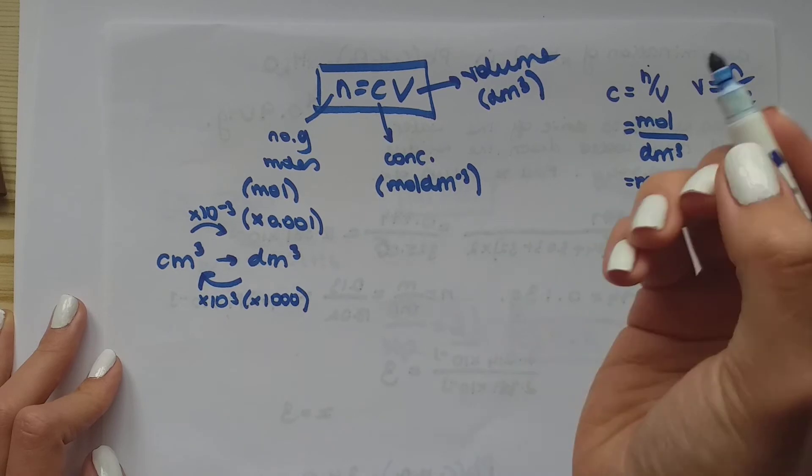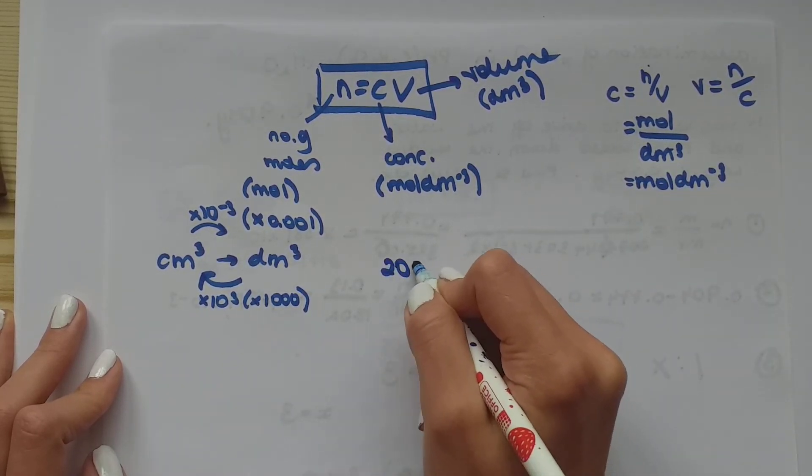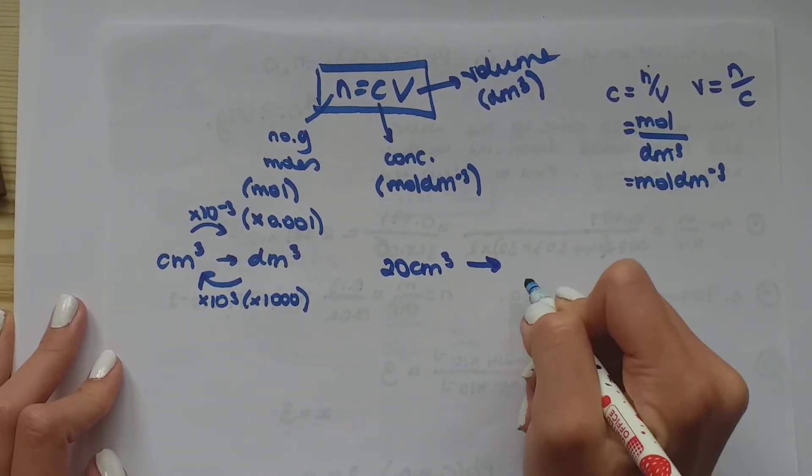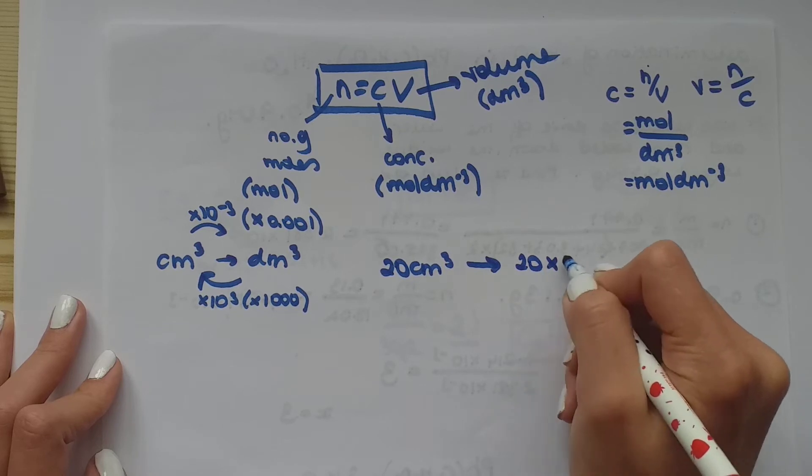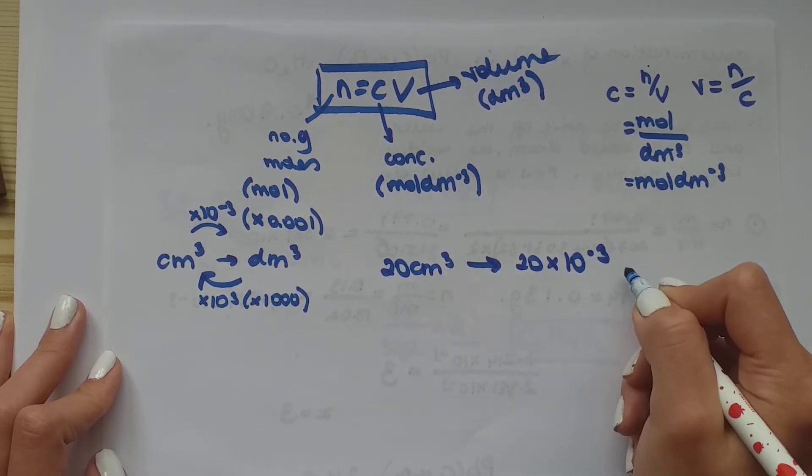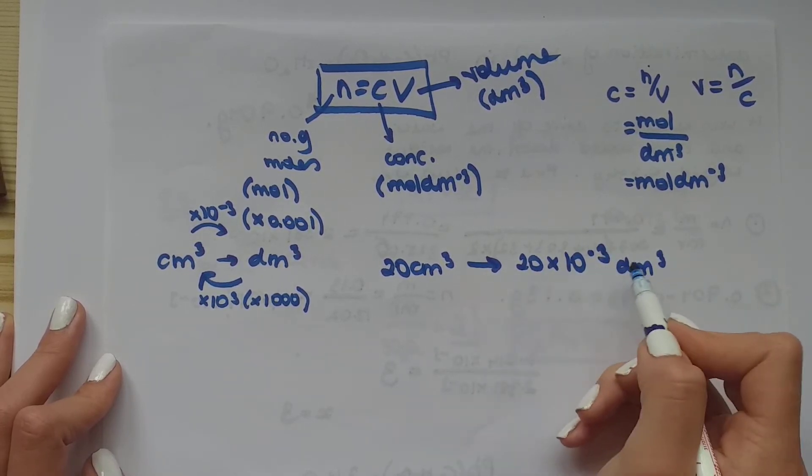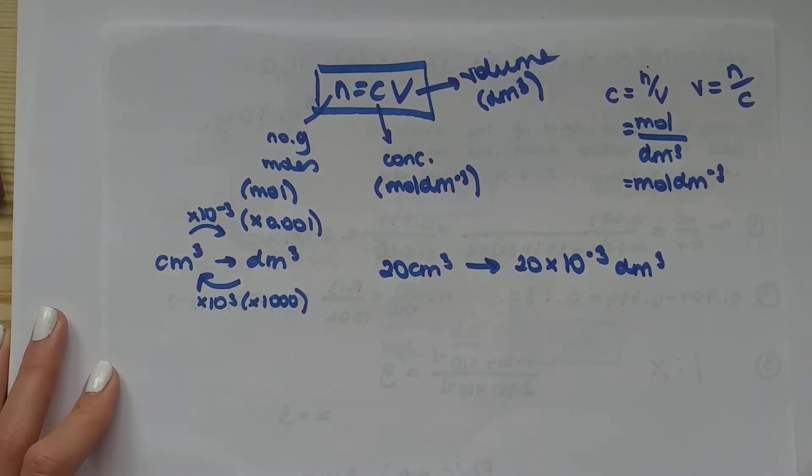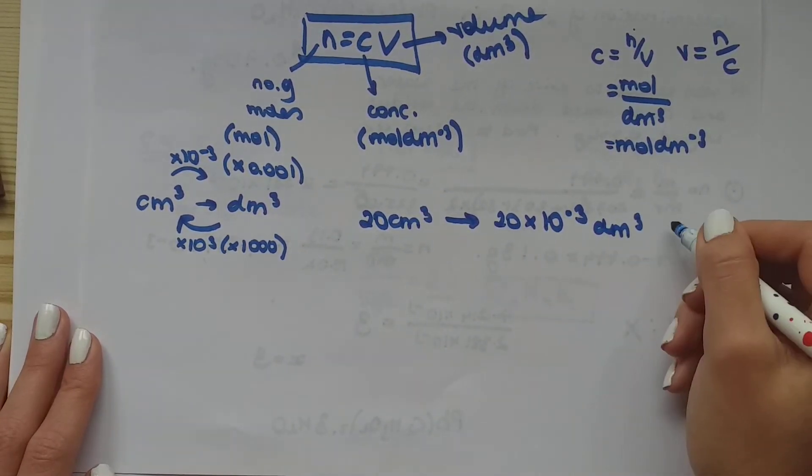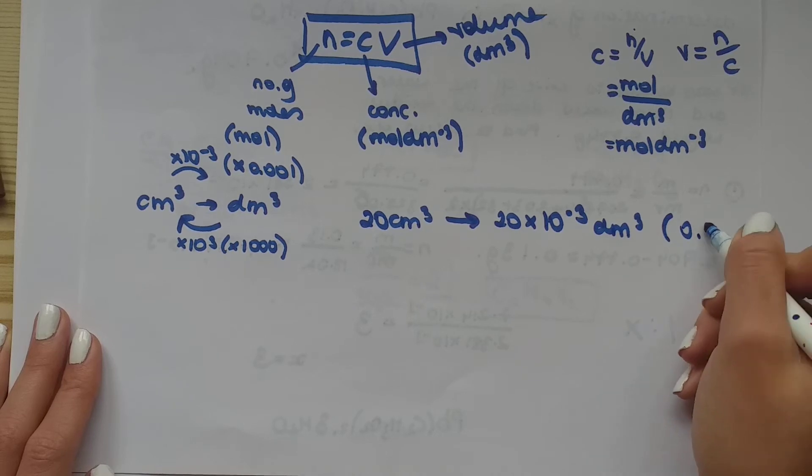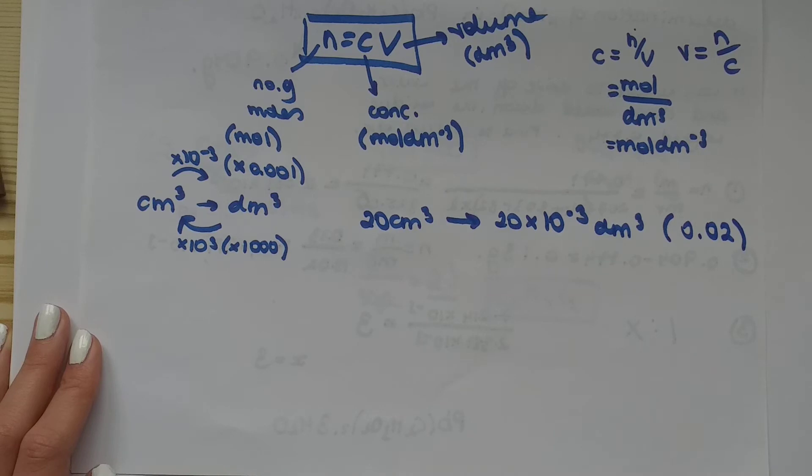So decimeters is a bigger number than centimeters. So for example, if you have 20 centimeters cubed and you want to find decimeters cubed, you times it by 10 to the minus three decimeters cubed. You can just leave it like this because that's the way that you can put it in your calculator too. You don't have to worry about writing 0.02. You can just leave it as 20 times 10 to the minus three.